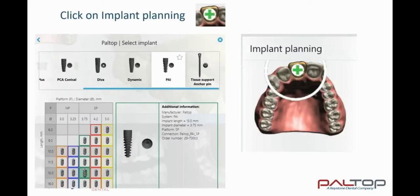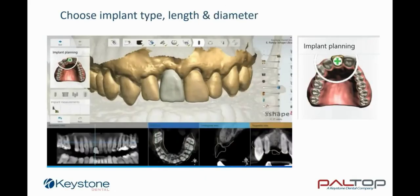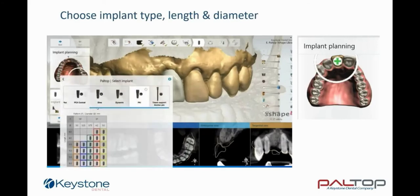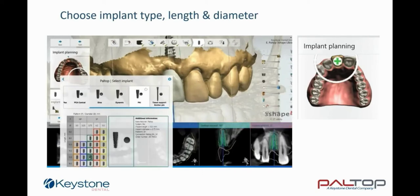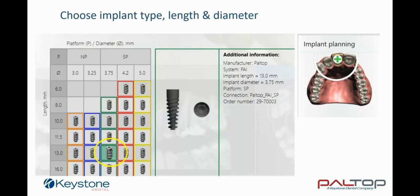To open the Paltop implant library, click on the green plus. You can now scroll through the Paltop implant types. On clicking on the green cross, you will open the Paltop implant library. Scroll through the implant types using the blue scroll bar. Once you have chosen your implant type — in this case Pi — you can click on the desired diameter and length of implant. The implant will immediately drop below the virtual crown. On choosing the implant from the table, the implant details will open in the window.